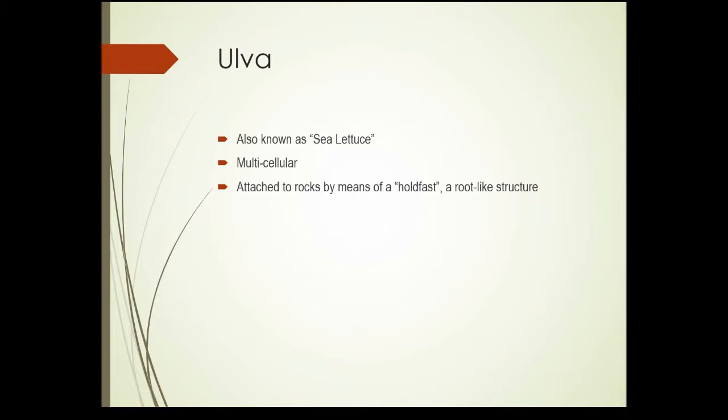Ulva is also known as sea lettuce. It's a multicellular algae and it attaches to rocks by means of something called a holdfast, which is a root-like structure. Keep in mind this differentiation between the parts of an algae's body — the thallus — is not as dramatic as in green plants. There's not a huge amount of differentiation, but you can see at least some in some of the green algaes.